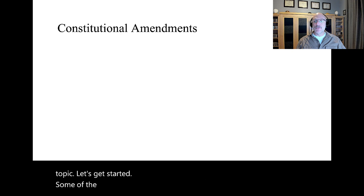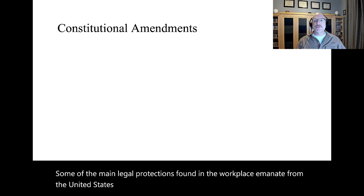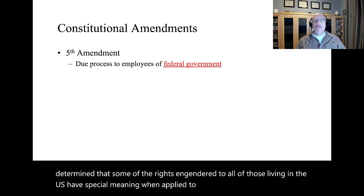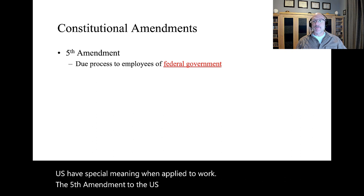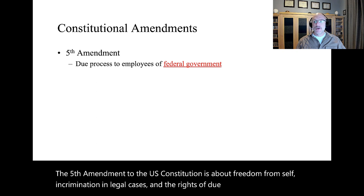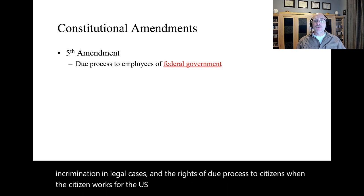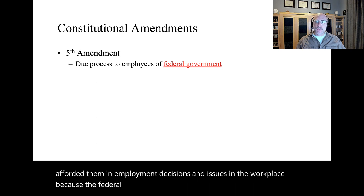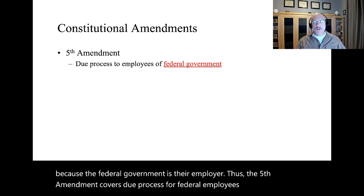Some of the main legal protections found in the workplace emanate from the United States Constitution. Scholars, lawyers, and judges have determined that some of the rights engendered to all of those living in the U.S. have special meaning when applied to work. The Fifth Amendment to the U.S. Constitution is about freedom from self-incrimination in legal cases and the rights of due process to citizens. When the citizen works for the U.S. government, the right to due process is afforded them in employment decisions, because the federal government is their employer.